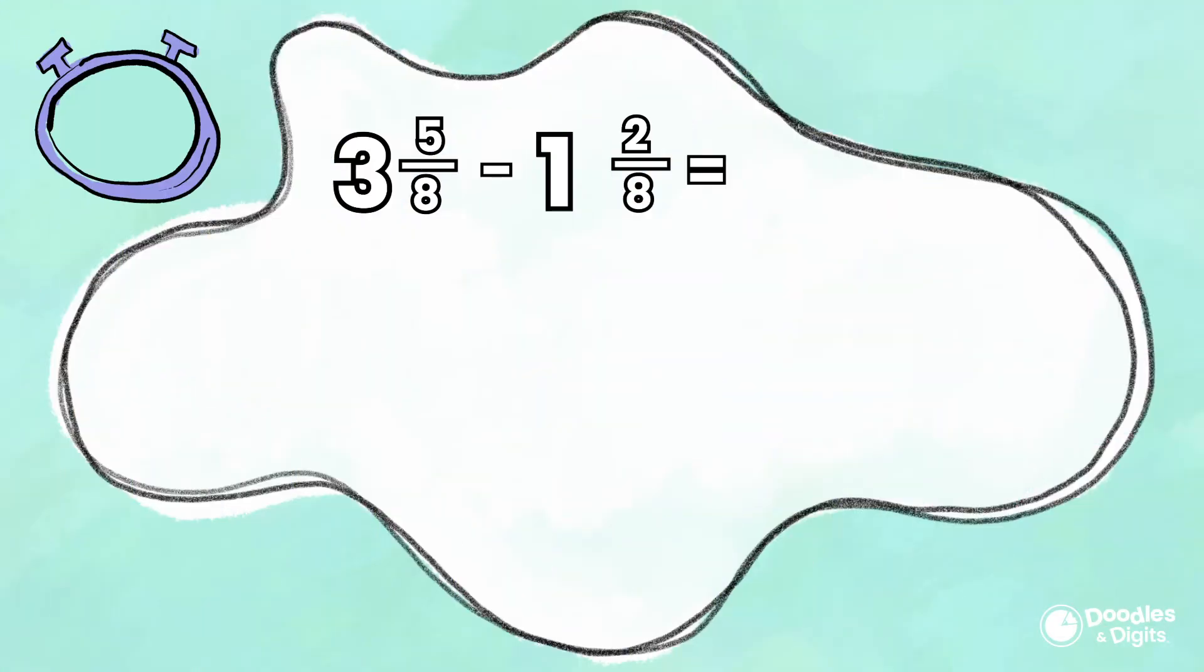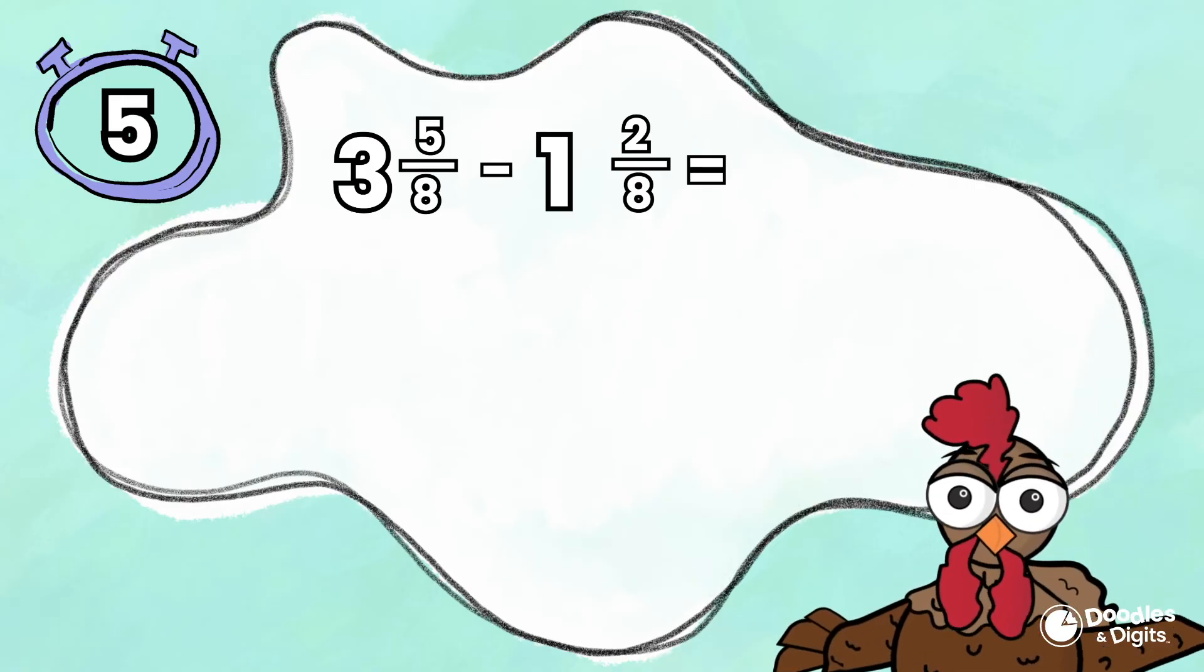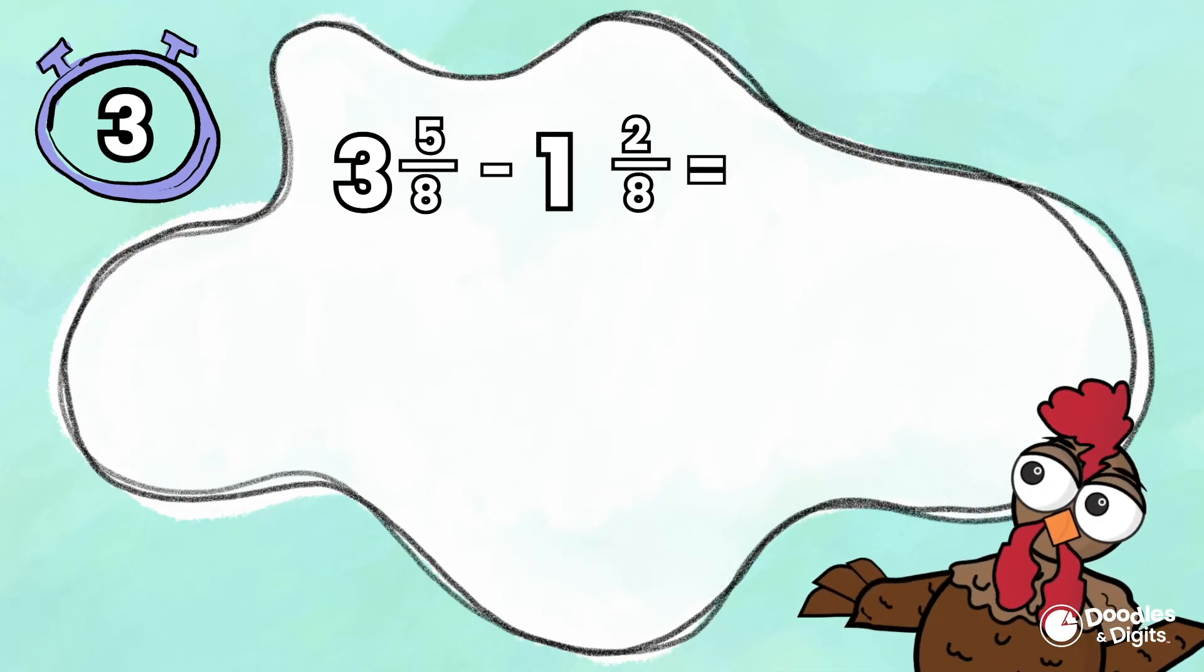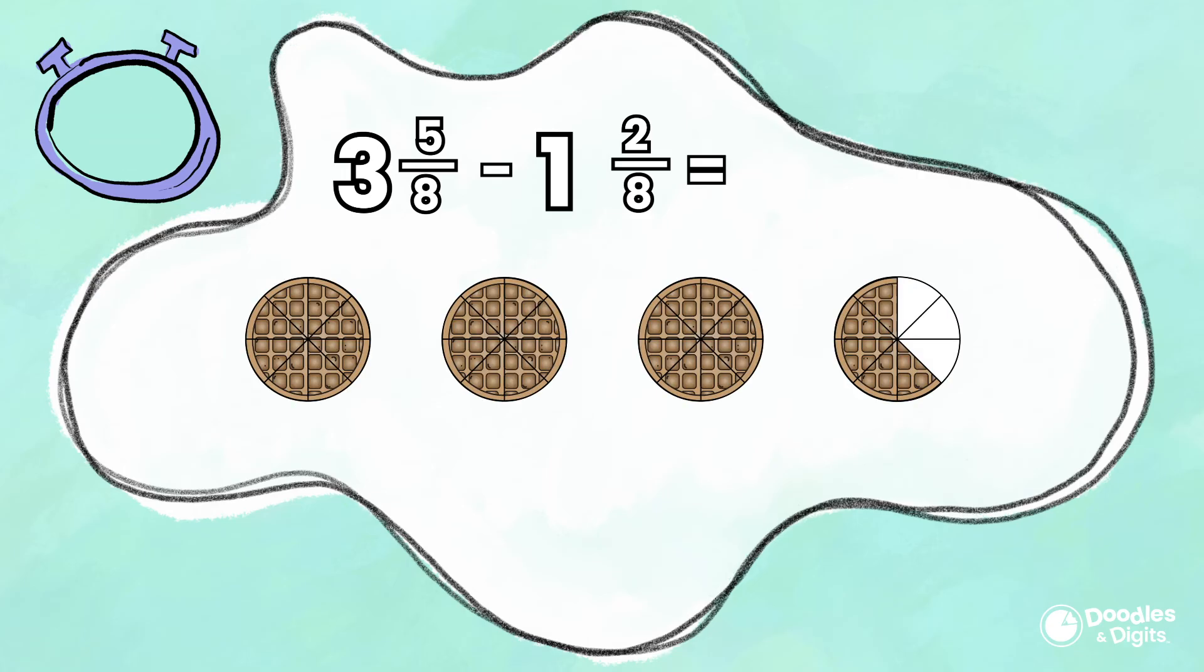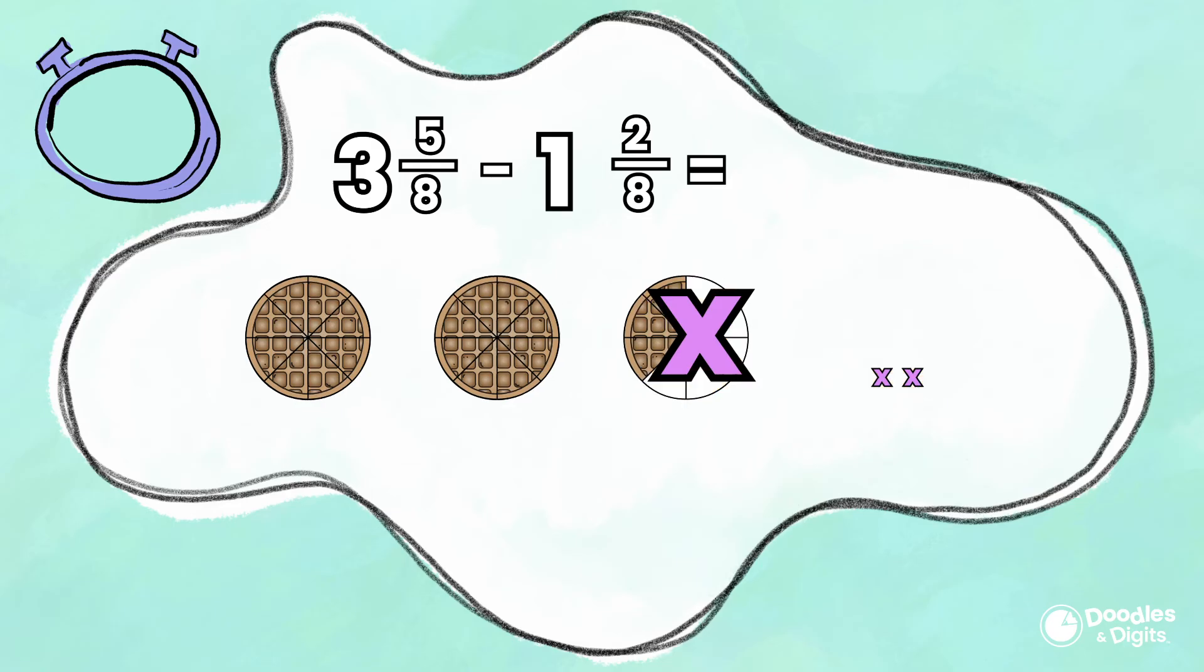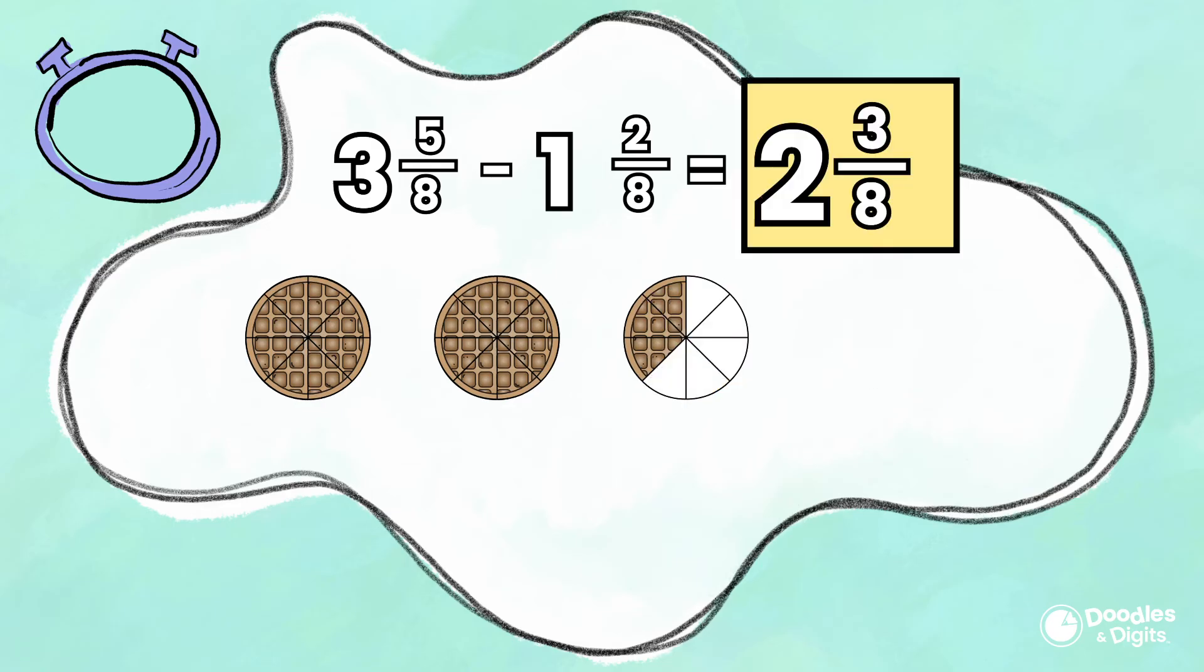Three and five-eighths minus one and two-eighths. I used models to solve this one. So I drew three and five-eighths and now I'm going to subtract one and two-eighths. Two and three-eighths. Let's do one final one.